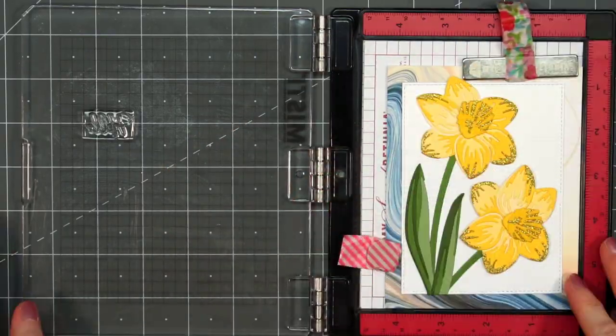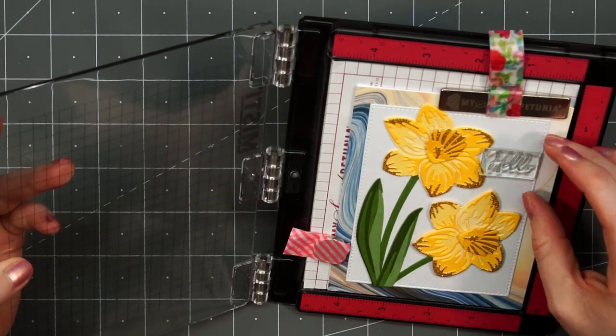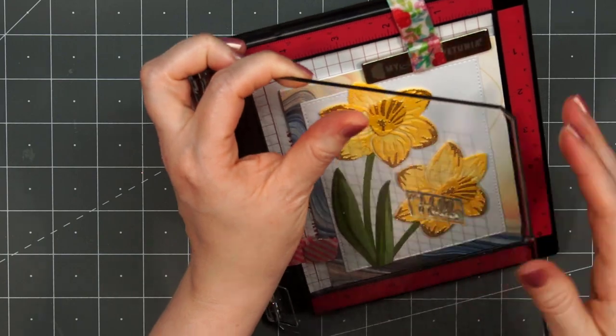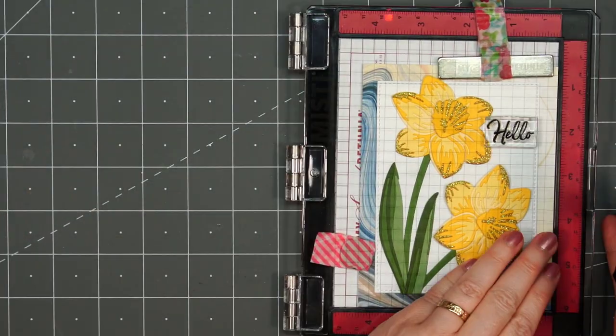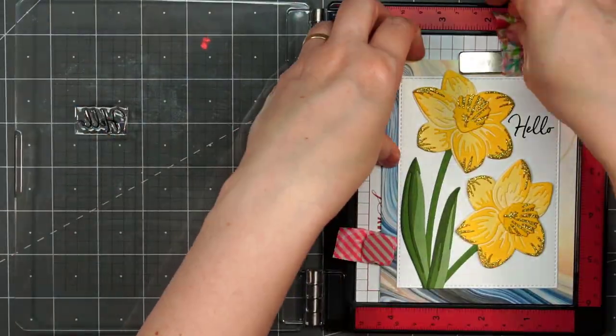For this sentiment, I want to make sure not to mess up my stamping, so I am using my Mini Misti. This is a stamp set from Waffle Flower called Classic Sentiments, and it's exactly that. Lots of for you's, love you, happy birthday, thanks, hello. Really good general sentiments.